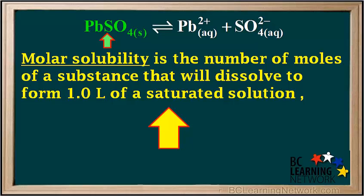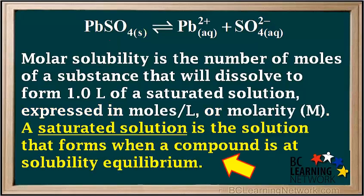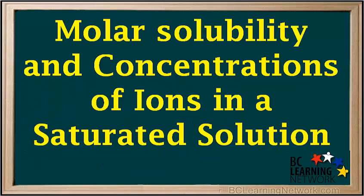Molar solubility is the number of moles of a substance that will dissolve in water to form one liter of a saturated solution. It is expressed in moles per liter, or molarity, abbreviated with a capital M. A saturated solution is the solution that forms when a compound is at solubility equilibrium — in other words, it contains all of the dissolved solute that it can, and its concentration is just equal to its molar solubility.